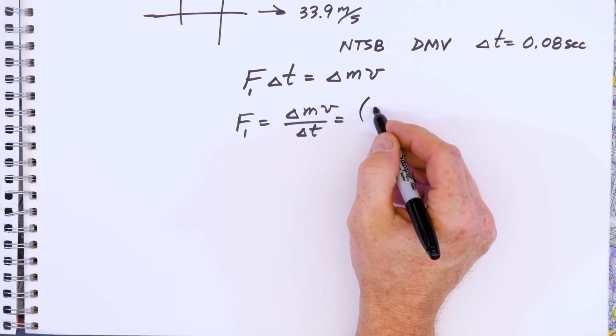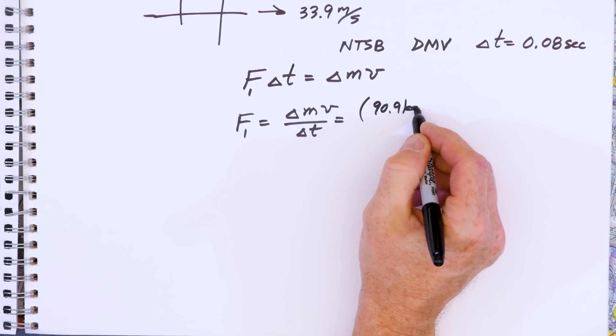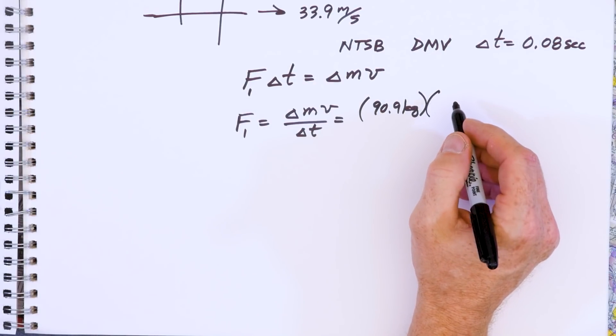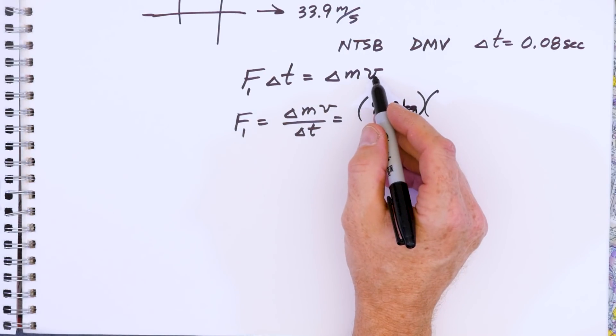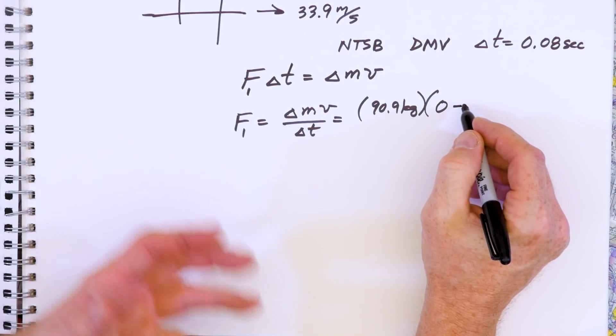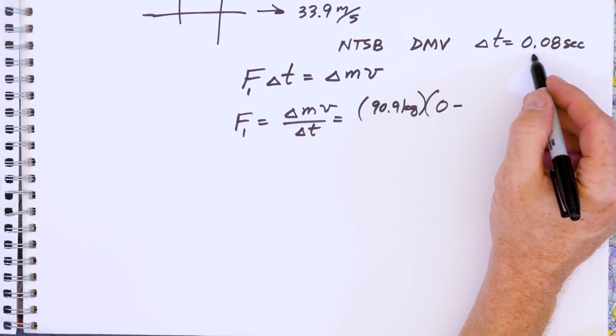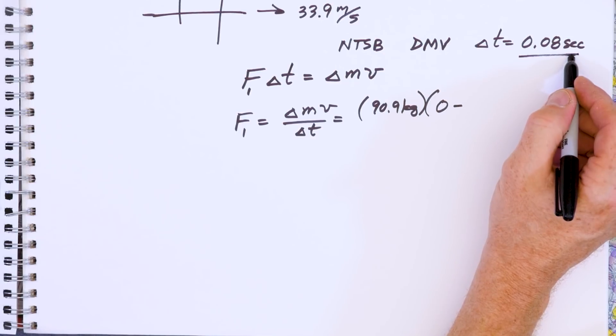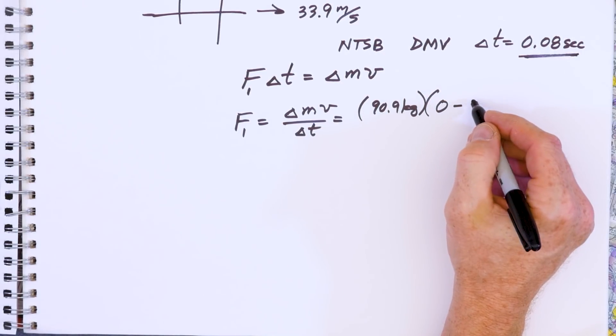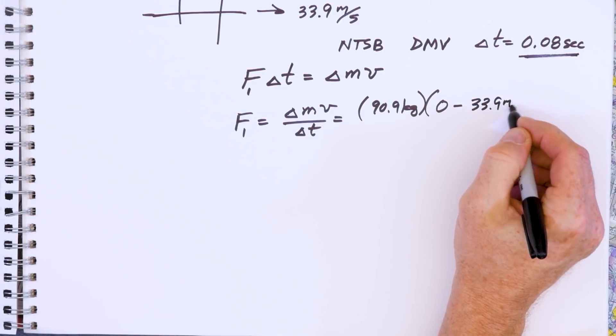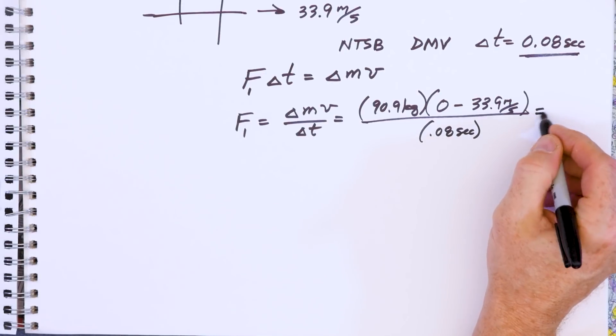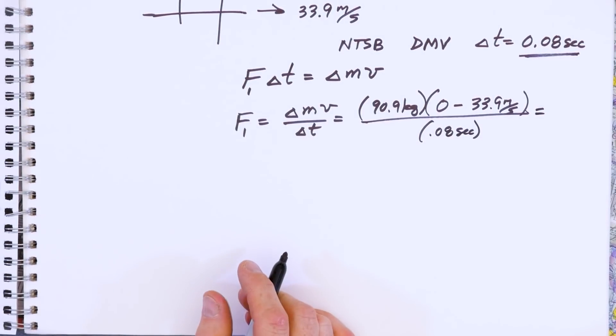We have a constant mass, 90.9 kilograms. As this pilot gets thrown into the glass or into the yoke, our velocity is a change in velocity, final minus initial. Our final velocity is zero because we're coming to rest either in a brick wall or a stack of hay, whatever it is that causes us to hit this hard and come to stop in this short amount of time. 33.9 meters per second over our delta T of 0.08 seconds. So pause the video now and crunch some numbers.